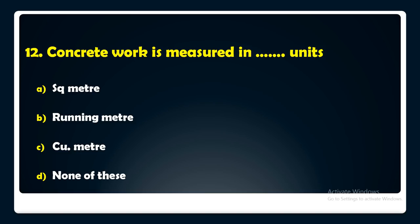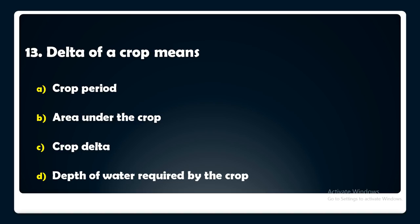Delta of a crop means — crop period, area under the crop, crop delta, or depth of water required by the crop? The answer is: delta of a crop means depth of water required by the crop.